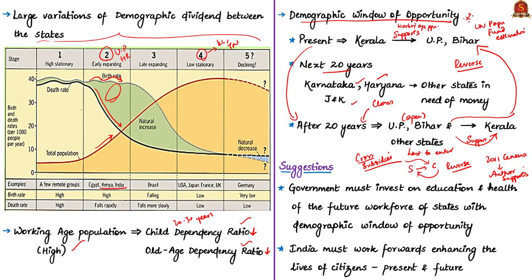This is the main reason the author supports the 2011 census-based allocation by the Finance Commission — for balance. States like Kerala and Tamil Nadu arguing that 2011 census-based allocation is an injustice will have to worry in the future because they will not be able to contribute as much. Finally, the author suggests the government must invest in the education and health of the future workforce of states like UP and Bihar, which have a demographic window of opportunity in the next 10 years. India must accept it will become the most populous nation and work towards enhancing the lives of present and future citizens.